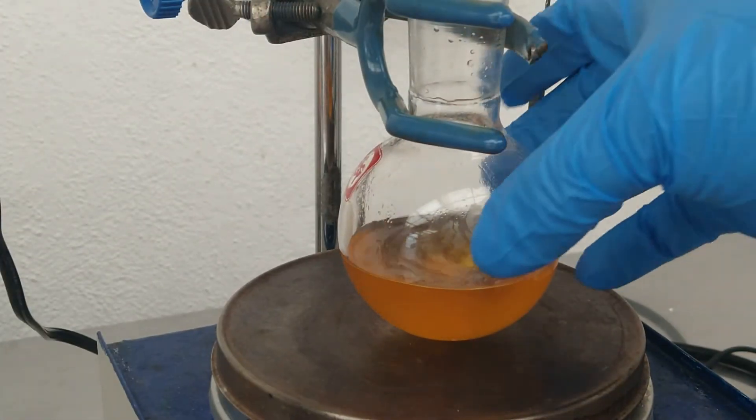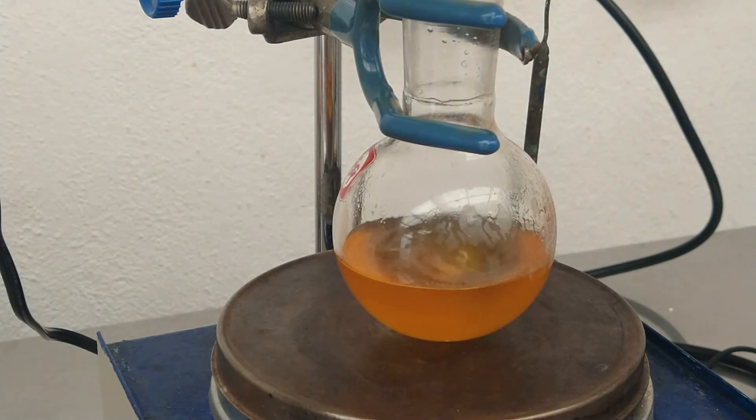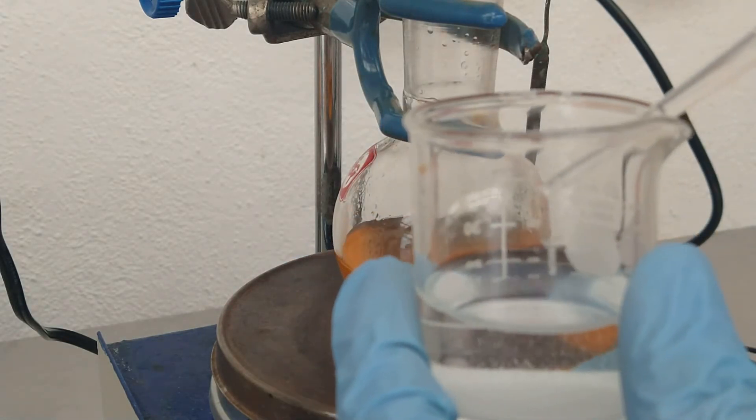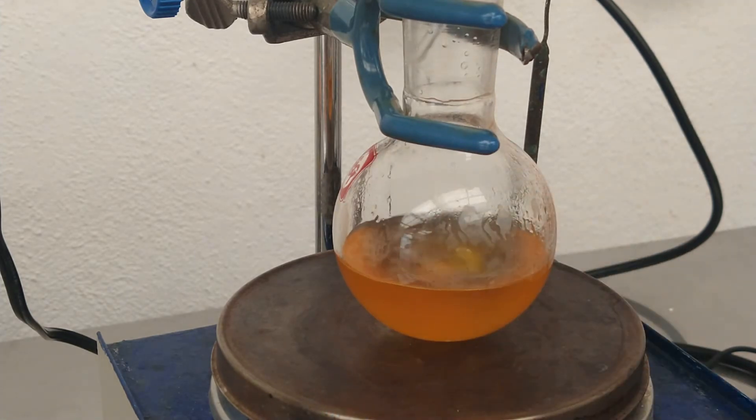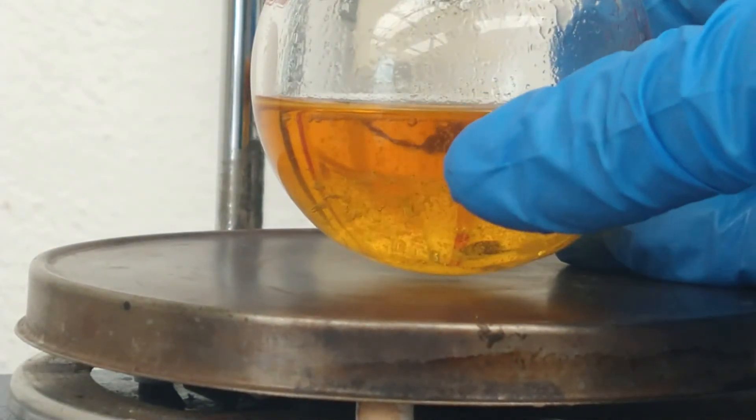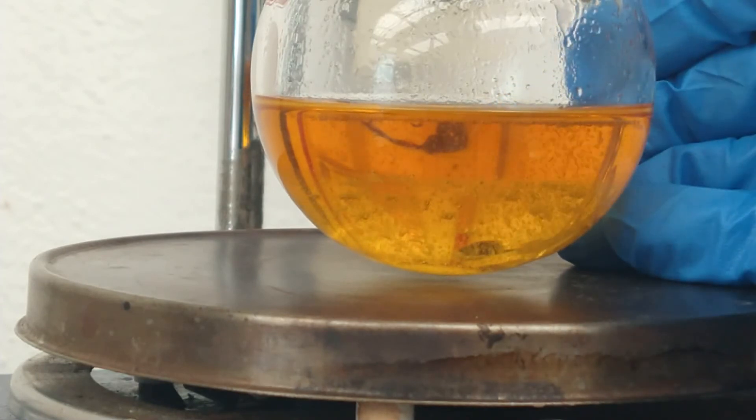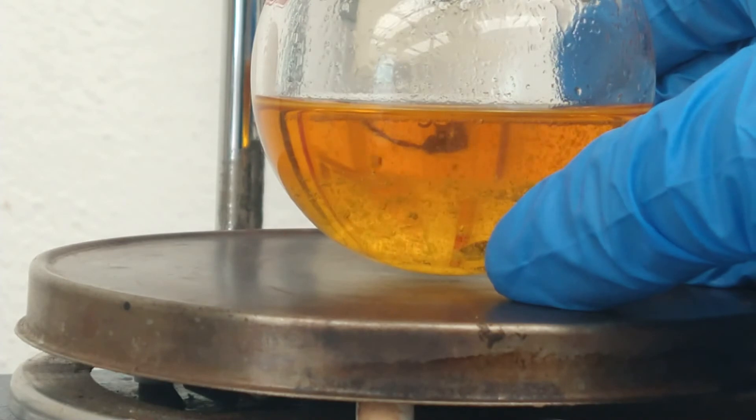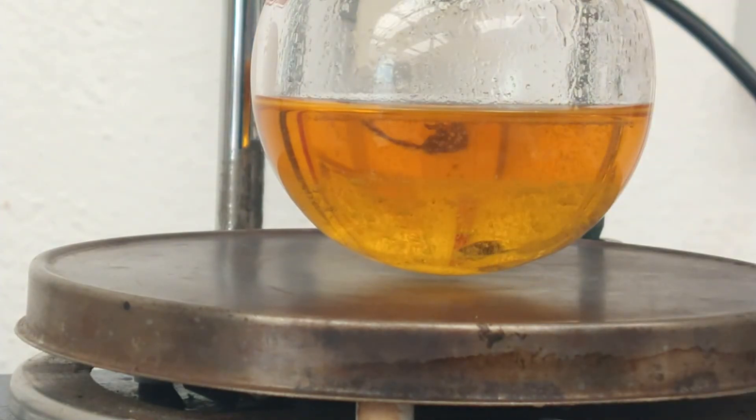Once the solids have been completely dissolved, we can proceed to check the pH with some pH papers. In this case the reaction is slightly acidic, so we can adjust it with a tiny amount of solution of sodium bicarbonate until no more bubbling appears. When all the acids have neutralized, we can observe the formation of two layers in which the upper layer is our desired product. The lower layer is mostly water and acetate salts. We can now proceed to separate the layers.